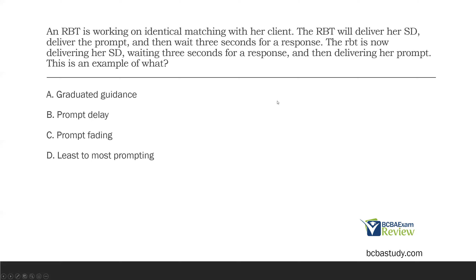Question nine. An RBT is working on identical matching with a client. The RBT would deliver the SD, deliver the prompt, and then wait three seconds for a response. The RBT is now delivering her SD, waiting three seconds for a response, and then delivering her prompt. What is this an example of? Ask yourself what the RBT is doing with this prompt. Is she engaging in graduated guidance? We're not sure if she's delivering physical prompts, so we can't claim it's graduated guidance without knowing that information — A is out.